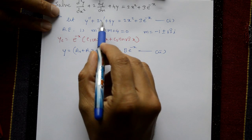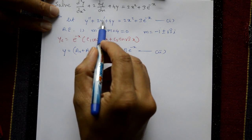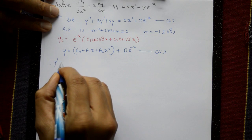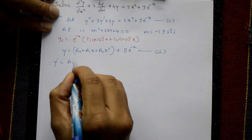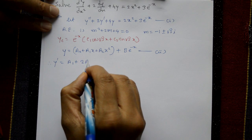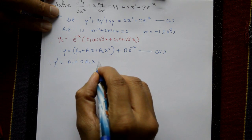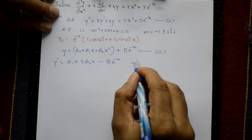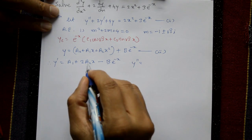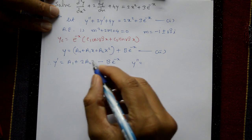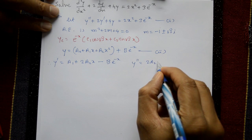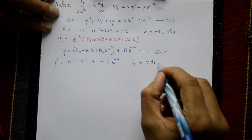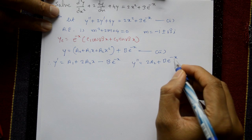Differentiating yp: y' = a₁ + 2a₂x - Be^(-x). Differentiating again: y'' = 2a₂ + Be^(-x).